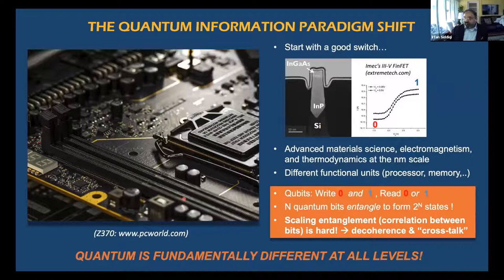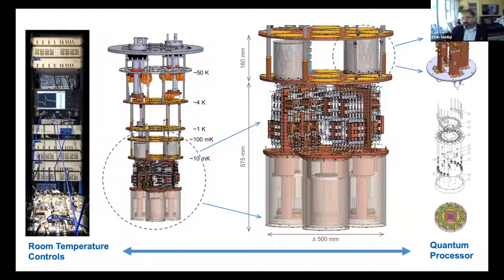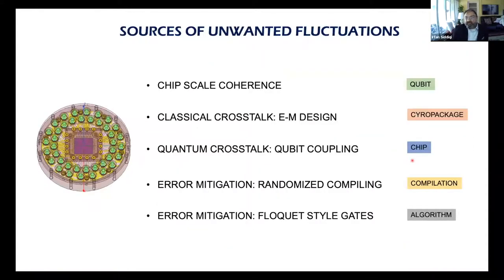The takeaway message is: quantum is fundamentally different at all levels, so there is a lot of re-engineering to be done. Here are the typical parts of a superconducting system: room-temperature controls on the left, a cryogenic vessel in the middle with discrete filters, amplifiers, and finally a cryo package with your quantum processor at its heart. I'm going to restrict myself just to that cryo package and talk about crosstalk and scaling issues there.